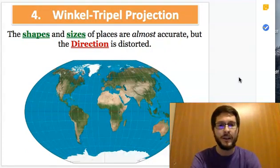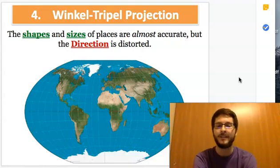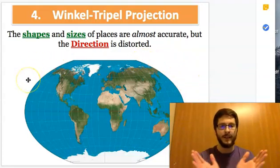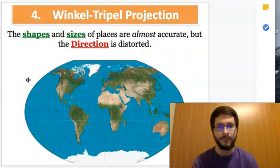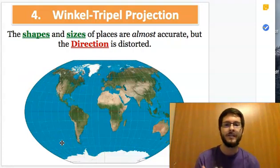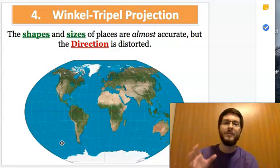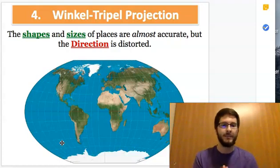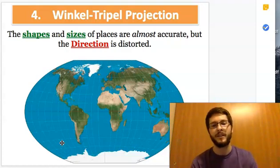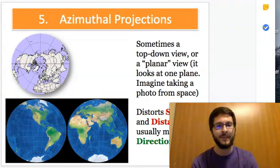Number four is called the Winkel Tripel Projection. It's a funny name. This one, you can see that the map, again, is not stretched all the way to the edges. It doesn't make a rectangle. It has still that kind of round shape to it. And you'll notice that the lines of longitude are also kind of curved, just like you would see on a globe. So it does keep the shapes and the sizes of things accurate or almost accurate, but the direction, in this case, gets messed up. So, again, if you're trying to navigate on an old-timey ship, you're not going to get to the correct destination in the right way.